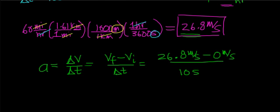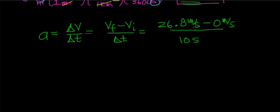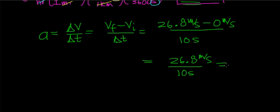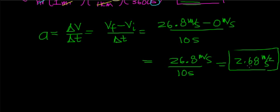When you do this out, you should get 26.8 meters per second minus 0, which is 26.8 meters per second, divided by 10 seconds. What you should get is 2.68 meters per second squared. That's going to be the acceleration over that 10-second interval, and that's going to mean that every second that this object is accelerating, the velocity is going to increase by 2.68 meters per second.